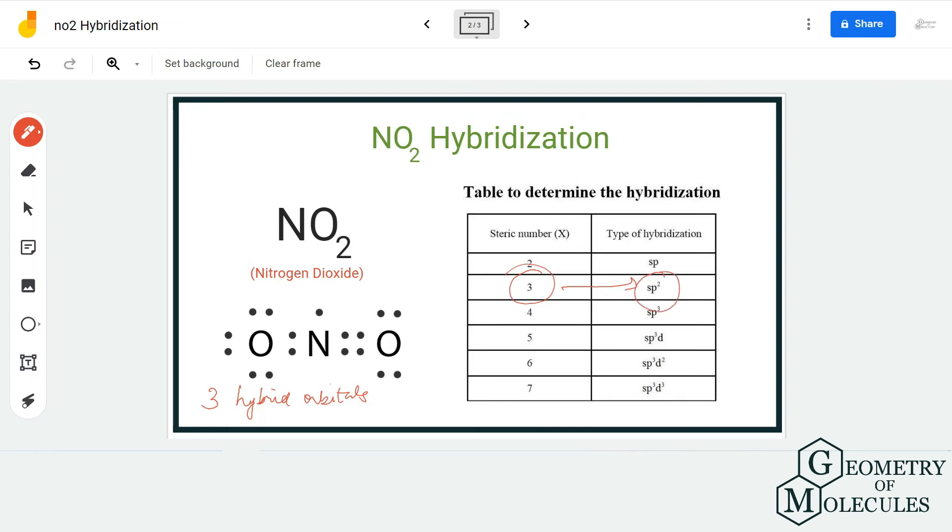On this table, which means that NO2 has sp2 hybridization. So I hope this video helps you to understand the hybridization of NO2 molecule.